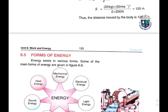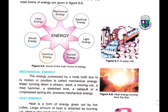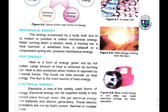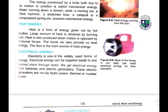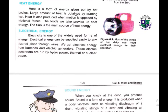Energy exists in various forms. Mechanical energy is the energy possessed by a body due to its motion or position — examples include running water, wind, a moving car, a lifted hammer, and a stretched bow. Heat energy is a form of energy given out by hot bodies. Large amounts of heat are obtained by burning fuel; heat is also produced when motion is opposed by frictional forces. The food we eat provides us heat energy, and the sun is the main source of heat energy.